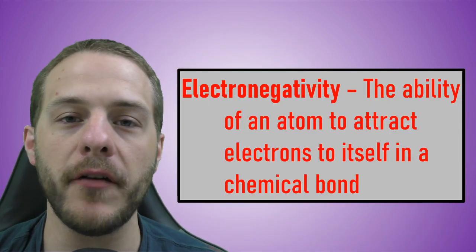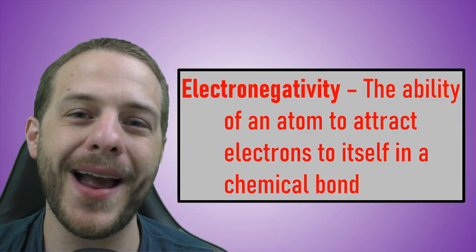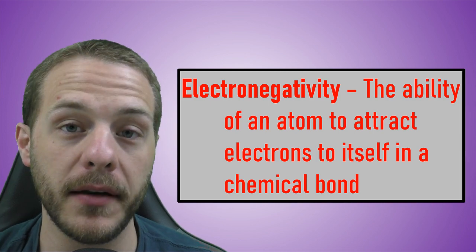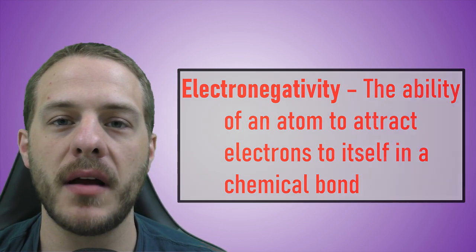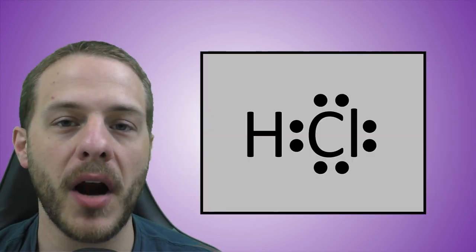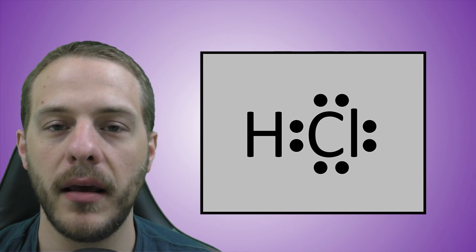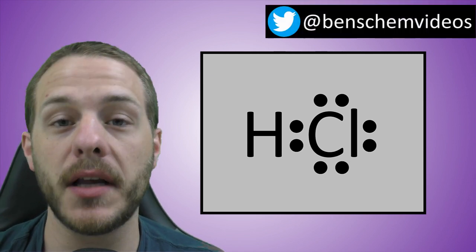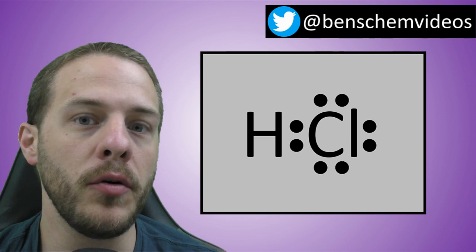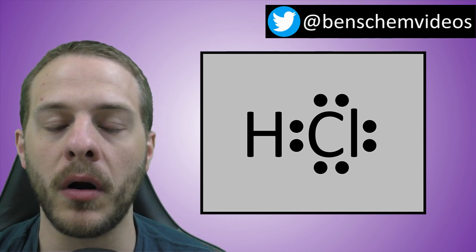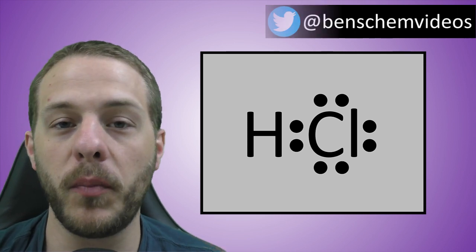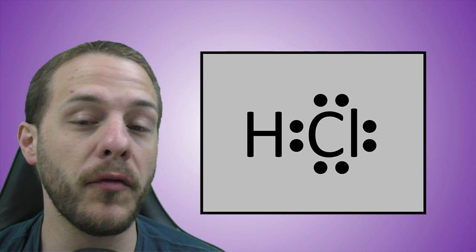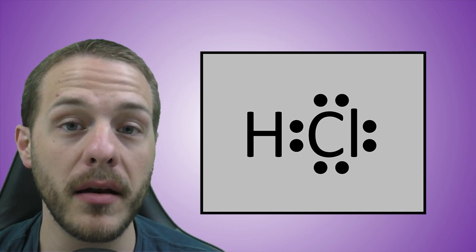Electronegativity is the ability of an atom to attract electrons to itself in a chemical bond. To introduce this concept, consider the Lewis dot structure for hydrogen chloride. This Lewis structure tells us that the chlorine atom has three electron pairs all to itself — the lone pairs — and that the fourth pair of electrons is shared between the hydrogen and the chlorine in the form of a single covalent bond.